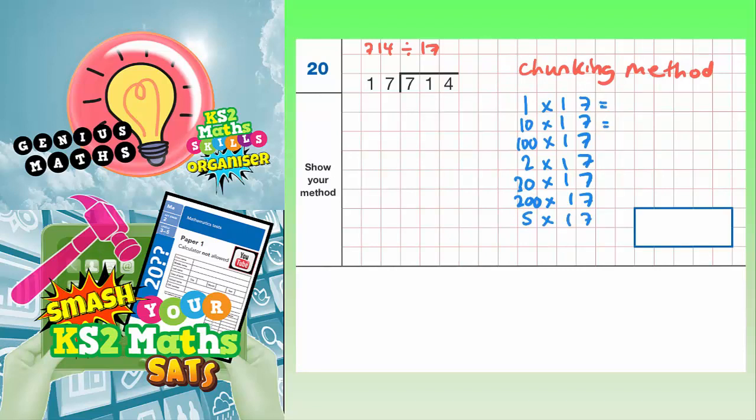Now, I've actually chosen relatively easy numbers to work out. So here we go. 1 times 17 is 17. 10 17s is just the same as 1 times 17 but with a 0 on the end, so 170. 100 17s is 1 times 17 but with two 0s on the end, so that's going to be 1,700.